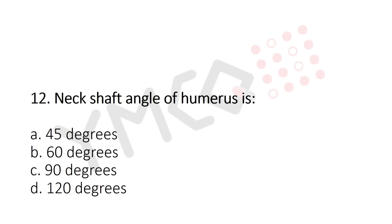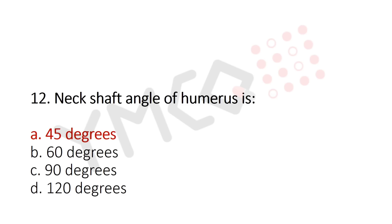Question 12: The neck-shaft angle of the humerus is — option A: 45°; option B: 60°; option C: 90°; option D: 120°. The answer is option A: 45°.